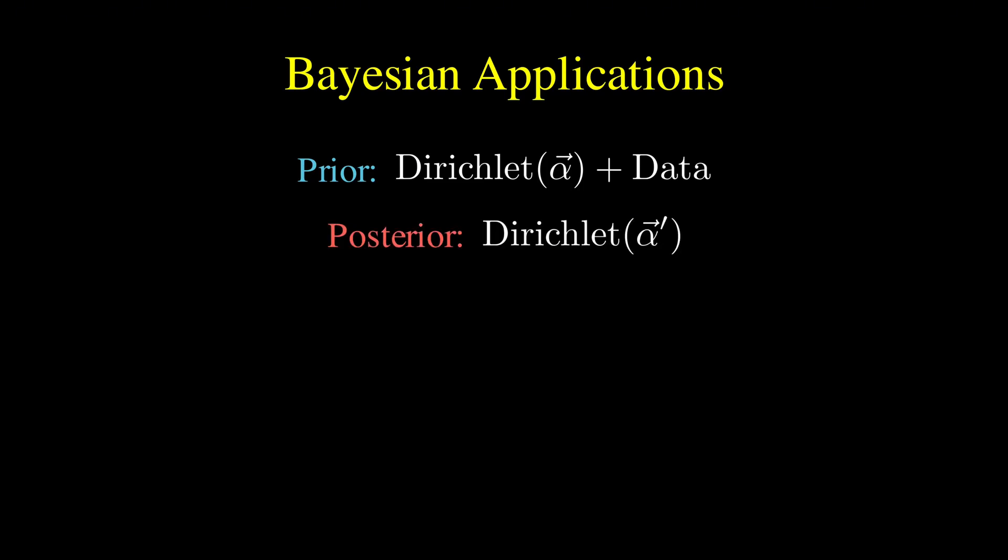In Bayesian statistics, the Dirichlet distribution plays a crucial role as a prior distribution for categorical data. It's what we call conjugate to the multinomial distribution, which means if you start with a Dirichlet prior and observe multinomial data, your posterior is also Dirichlet, just with updated parameters.